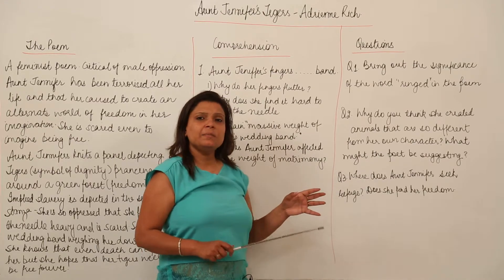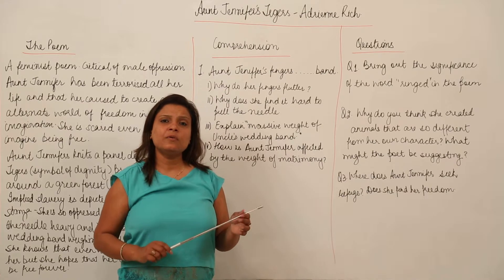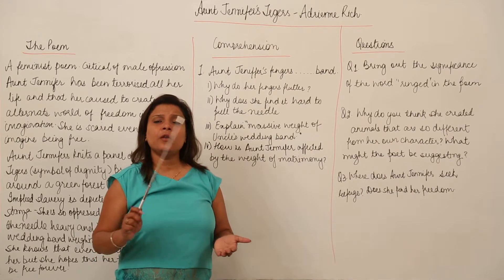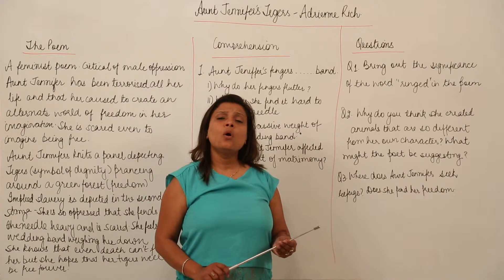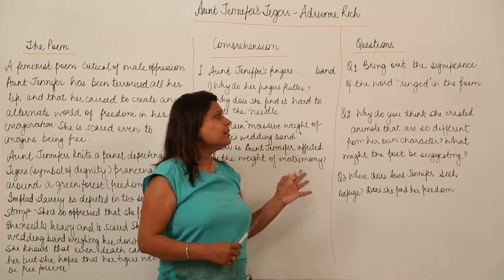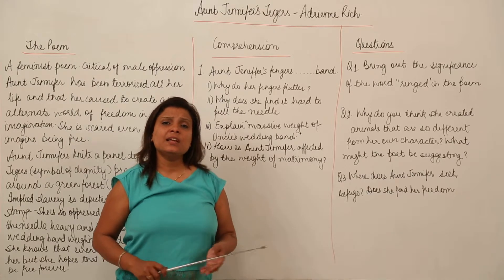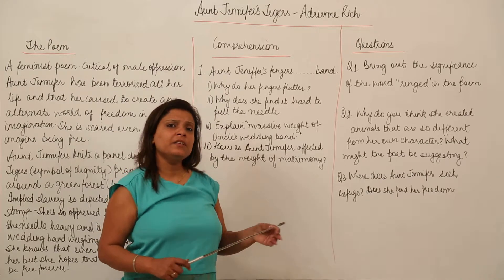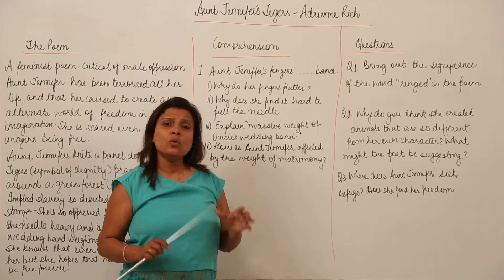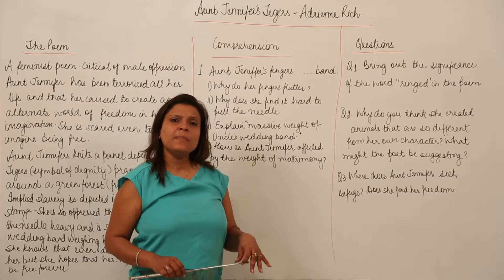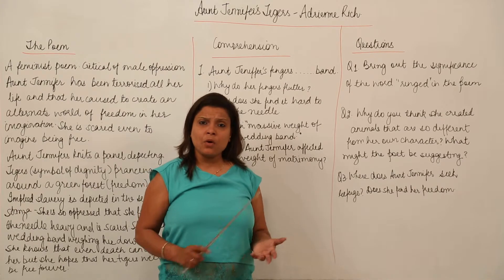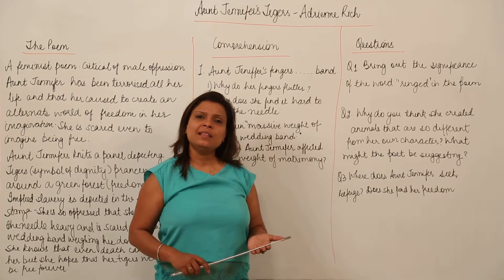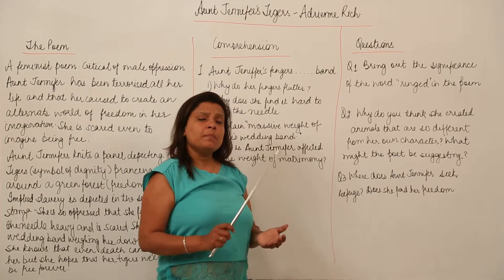But for her, she has been given that ring as a symbol of slavery, symbol of oppression by the husband who has probably tortured her all his life. And in the third stanza also, she thinks that she would be able to free herself in that imaginative world. But she is so suppressed by him that she now realizes that even in death that ring will be on her and even in death as in life, he will be mastering her.